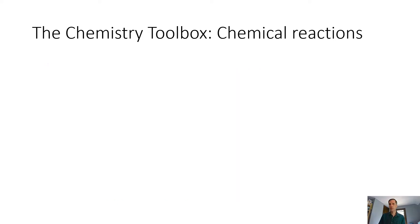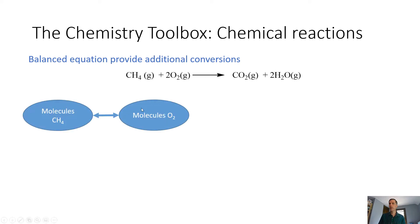We also have some additional tools that come from chemical reactions. The balanced chemical equation actually provides additional conversions. Let's imagine that we have the combustion of methane. What we know is that the number of molecules of methane that we have is going to be related to the molecules of O2, and that's going to be based on the balanced equation.